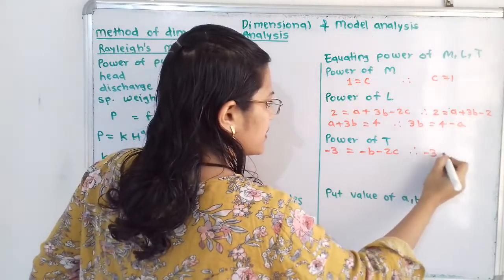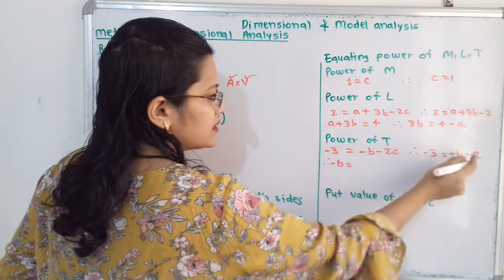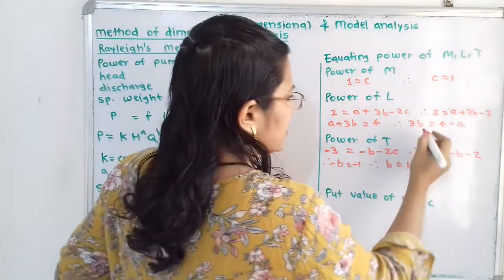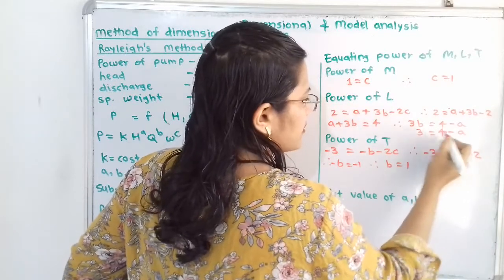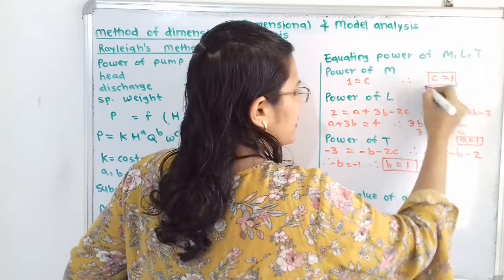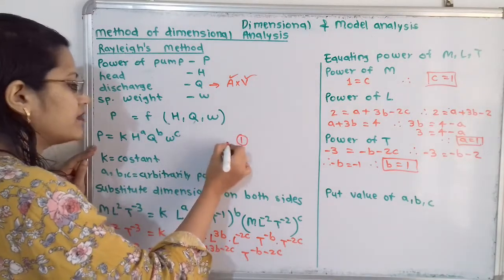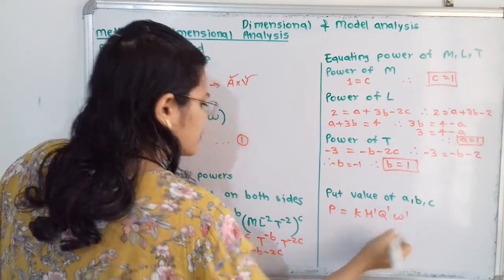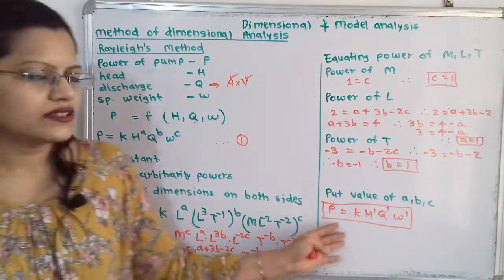With B = 1, substituting into A + 3B = 4 gives A + 3 = 4, therefore A = 1. So the values are A = 1, B = 1, C = 1. Substituting back into the equation, P = K · H¹ · Q¹ · W¹. This is the expression for the power of the pump in terms of head, discharge, and specific weight.